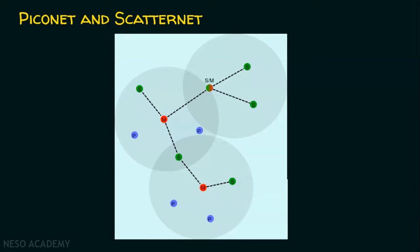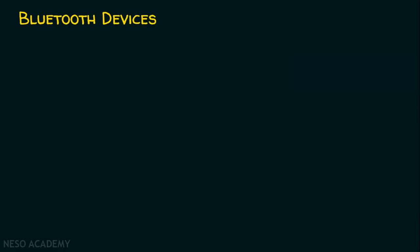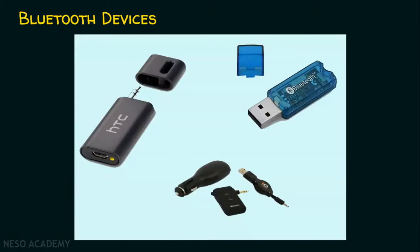Now let's see Bluetooth devices or adapters. We have many adapters that differ in size and functionality. Bluetooth can connect fixed devices and mobile devices. For example, if we have a desktop computer and need Bluetooth connectivity for it, we can purchase a Bluetooth adapter and plug it into the USB port of the desktop computer, giving Bluetooth connectivity to a fixed device. No matter whether it is a fixed or a mobile device, Bluetooth can establish short-range communication between them.